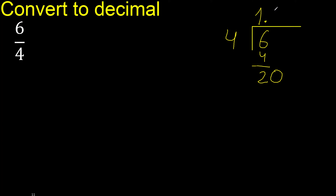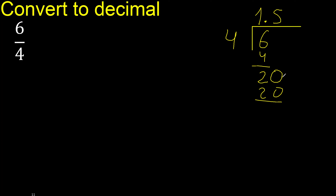4 multiplied by 5 is 20. Subtract: 20 minus 20 is 0.